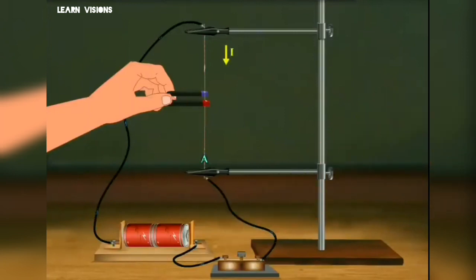Now close the key. When the current will flow from top to end, the copper wire bends. Let's mark this point as point C.